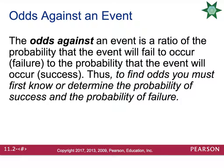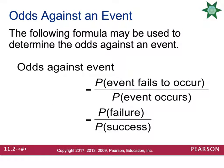The odds against an event is a ratio — which means fraction — of the probability the event will fail to occur compared to the probability that the event will occur. To find the odds, you must first determine the probability of success and the probability of failure. The formula is: the probability the event fails to occur divided by the probability the event does occur, or shorthand: probability of failure divided by probability of success.